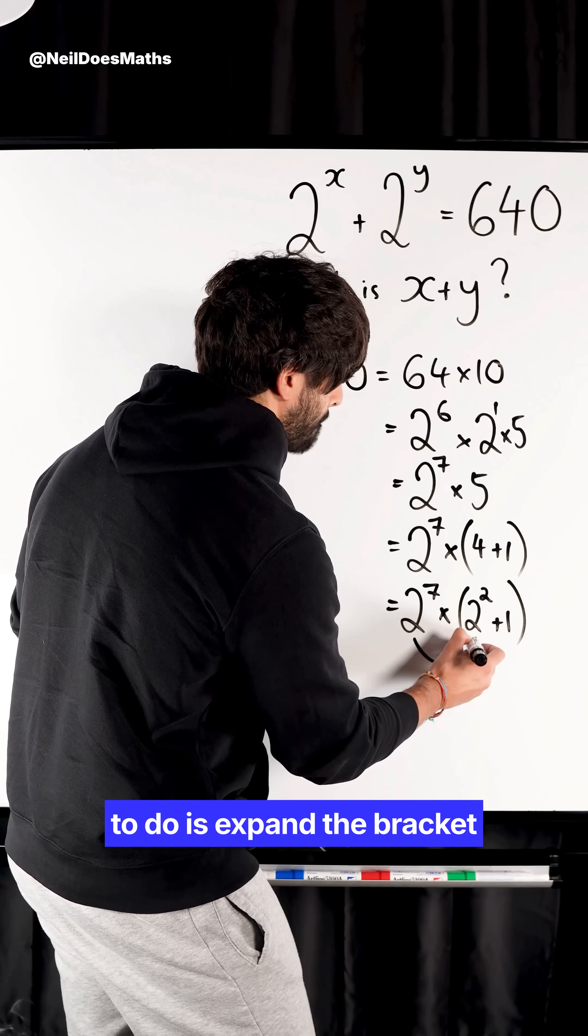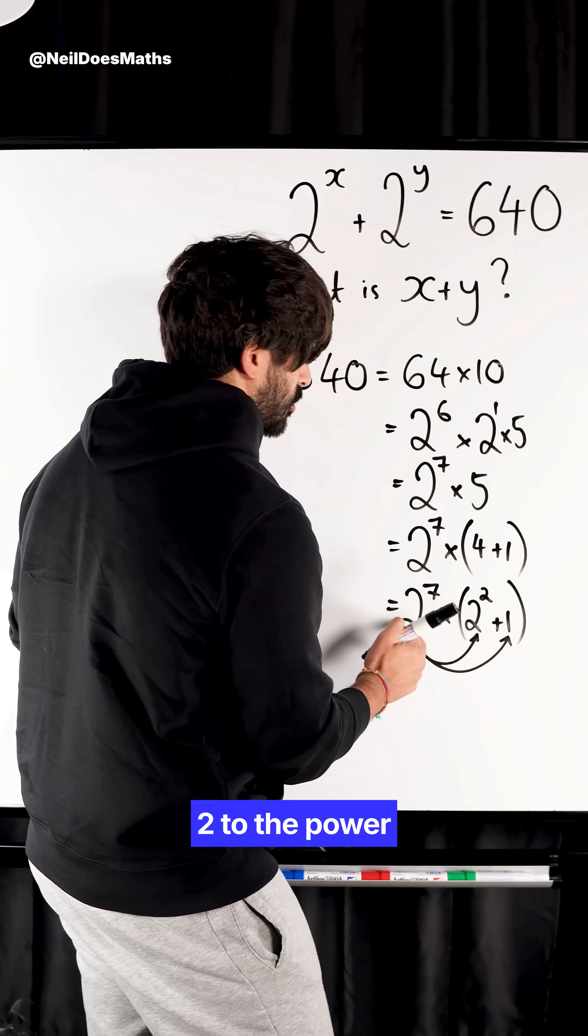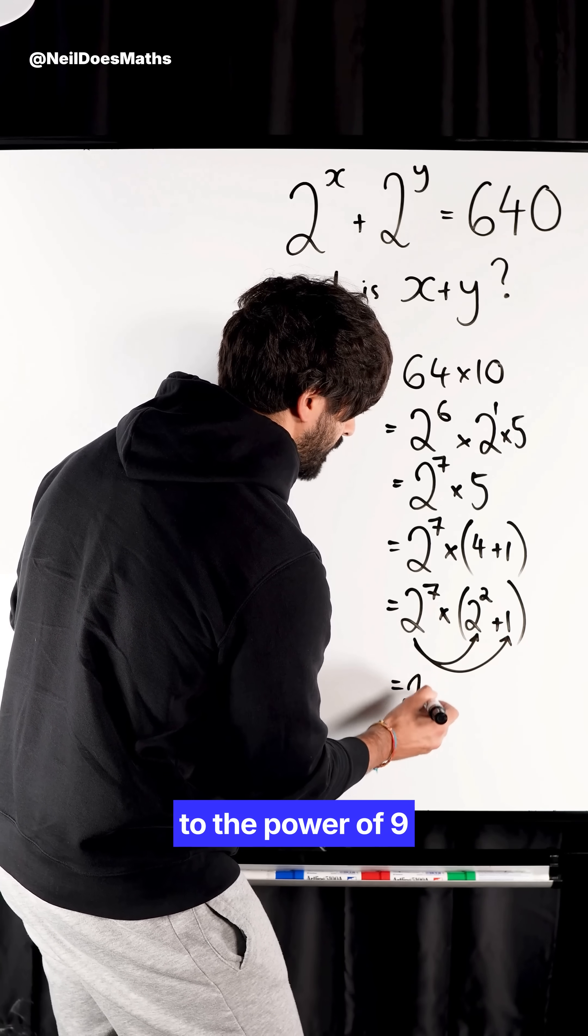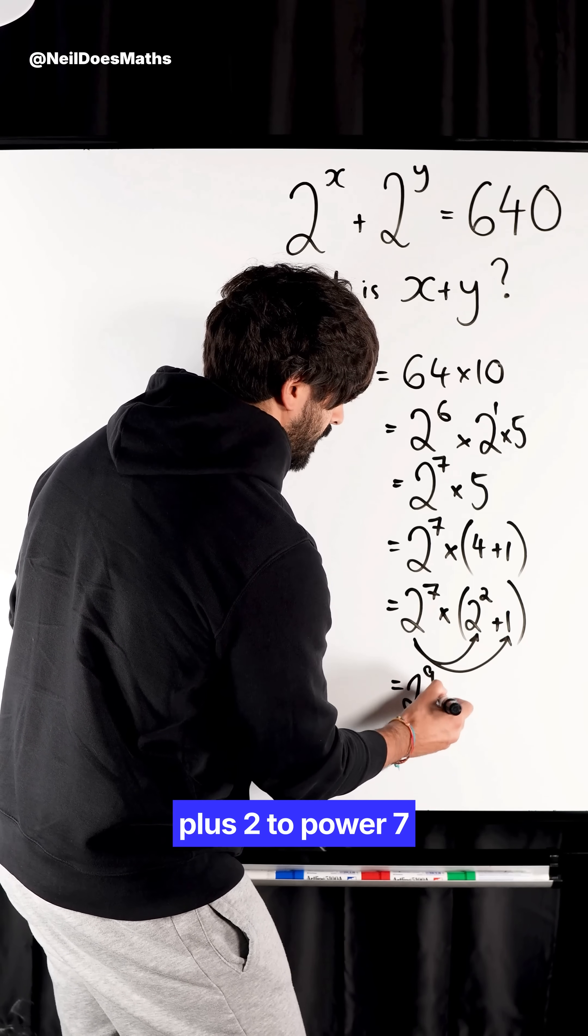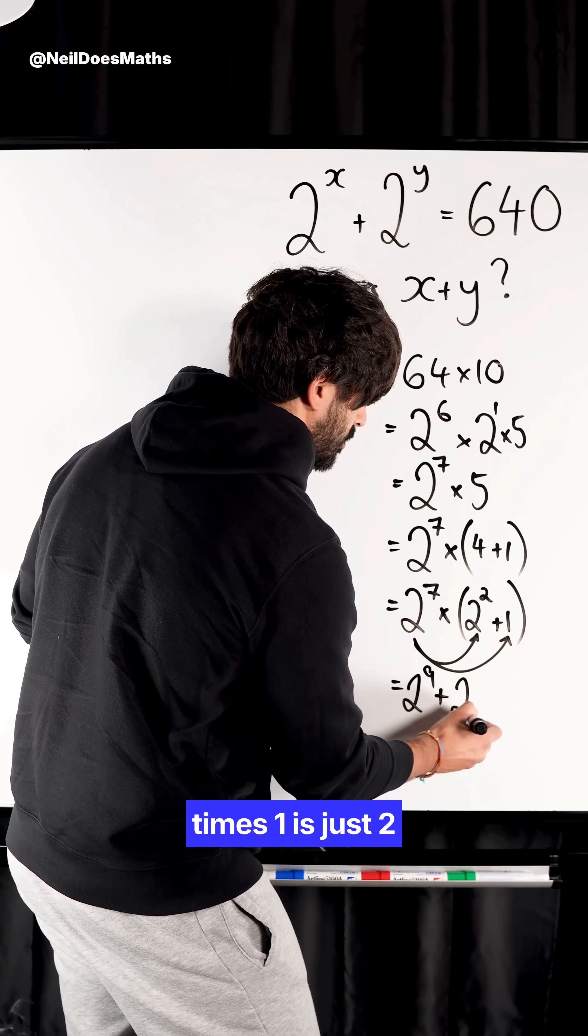Now the next thing I need to do is expand the bracket. 2 to the power of 7 times 2 to the power of 2, we add the powers: 2 to the power of 9. Plus, 2 to the power of 7 times 1 is just 2 to the power of 7.